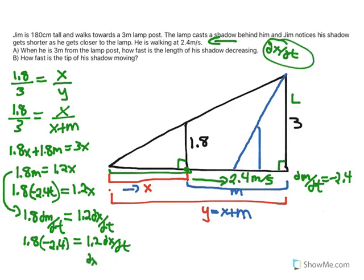So just to isolate, we get 1.8 over 1.2 times negative 2.4. So dx by dt, or the length of the shadow, is decreasing at 3.6 meters per second.